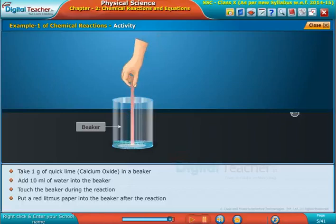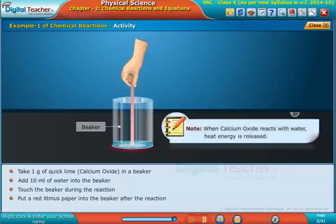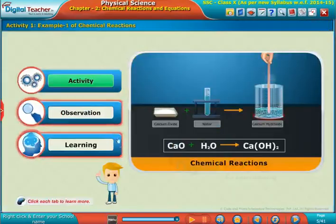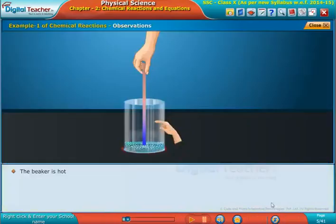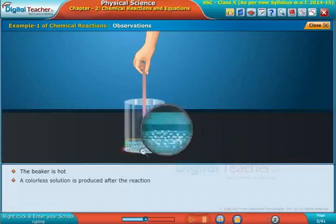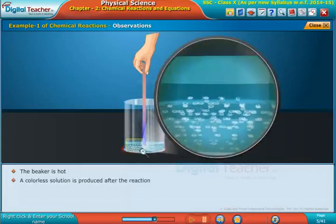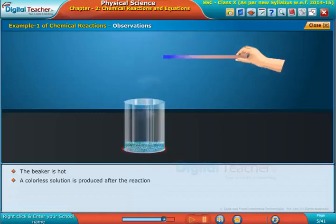The beaker is hot. A colorless solution is produced after the reaction. The red litmus paper turns blue.